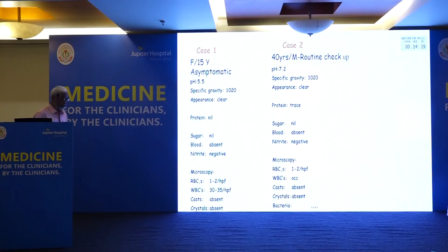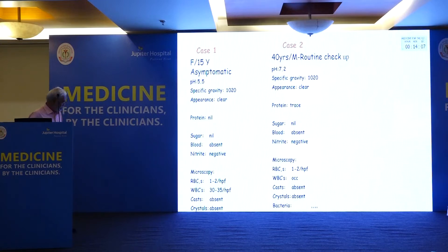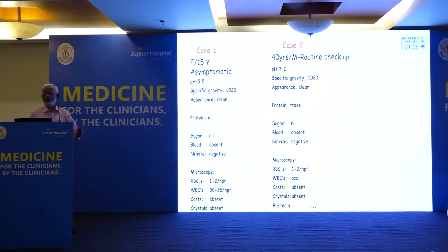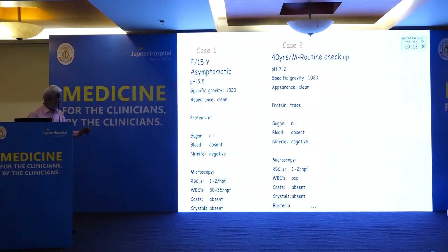Second case: a 40-year-old male went for a health check-up. Results showed pH 7, specific gravity 1020, appearance clear, protein negative, sugar nil, nitrite negative — but bacteria 2+. The patient was started on nitrofurantoin and referred to nephrology. The problem was that the urine was examined in the evening after being kept for more than 4 hours. Any urine kept more than 4 hours will have a bacterial count, and urea-splitting bacteria will increase the pH.